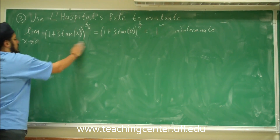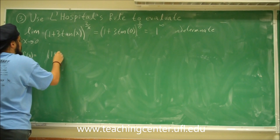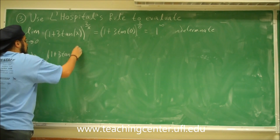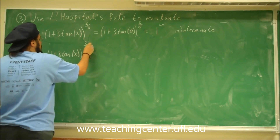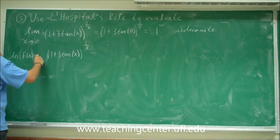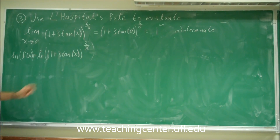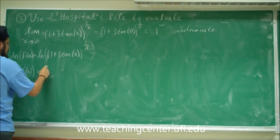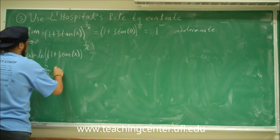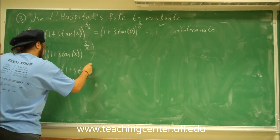This right here is a function, so I'll call that function f(x). f(x) is equal to 1 plus 3 tangent of x, raised to the 2/x. Now I want to bring 2/x down. In order to do that, I've got to introduce ln to both sides. So I take ln of f(x), and I'm left with: ln of f(x) equals (2/x) times ln of 1 plus 3 tangent of x.